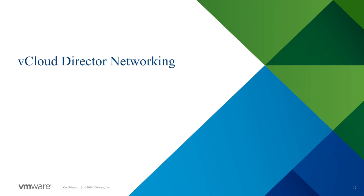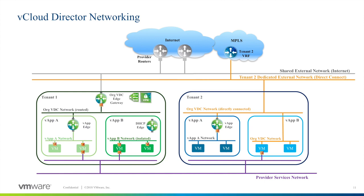Let's have a deeper look inside each kind of networking available in vCloud Director. External networks are typically used to connect to the internet or to corporate LANs. These networks could be shared between organizations or dedicated to a single organization. They represent an external physical network already existing outside the vCloud Director scope. An external network maps to a vSphere port group.